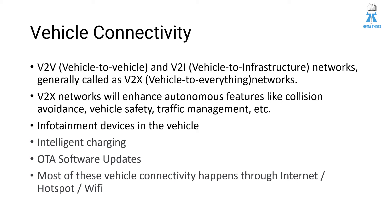Vehicle connectivity to the external world includes V2V (vehicle to vehicle) and V2I (vehicle to infrastructure) communication, collectively known as V2X — vehicle to everything. V2X networks enhance autonomous features like collision avoidance, lane departure warning, lane keeping assistance, vehicle safety, and traffic management.